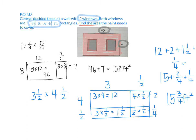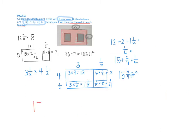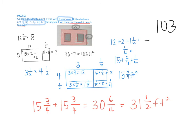But how many windows do we have? 2. So what do we have to do? Multiply it by 2. Go ahead and do that. 15 and 3/4 plus 15 and 3/4. What does that equal? 30 and 6/4. Do you agree? That's square feet. So if my total area is 103 square feet, I have to take away 31 and 1/2 square feet.